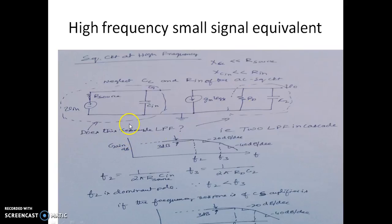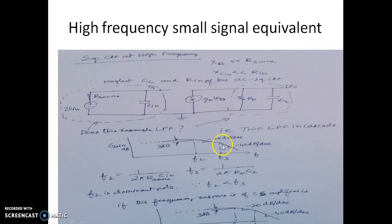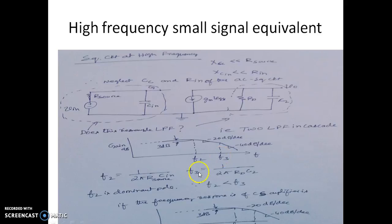This is the frequency response at higher frequencies. At mid band the gain is almost constant, but as you increase the frequency it starts reducing. This is the first cutoff frequency F2, and the roll-off is minus 20 dB per decade. When we further increase frequency there is one more cutoff frequency F3. Since we have two low-pass filters in cascade, F2 is due to R_source and Cin, and F3 is due to Rd and C2. Since F2 is smaller compared to F3, we call F2 the dominant pole, as the bandwidth is determined by F2.